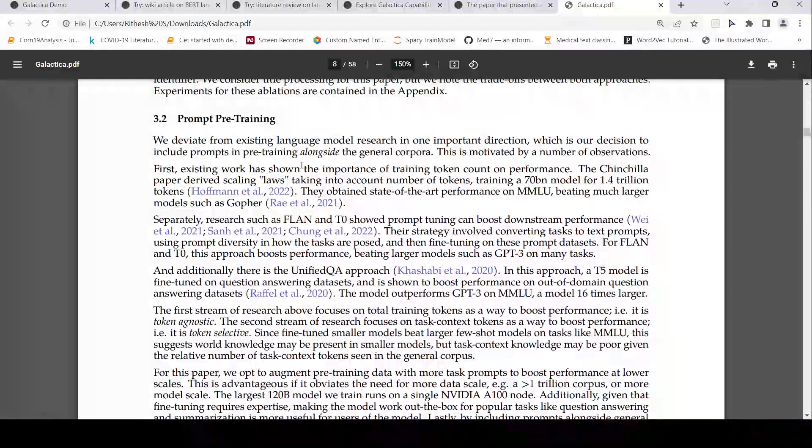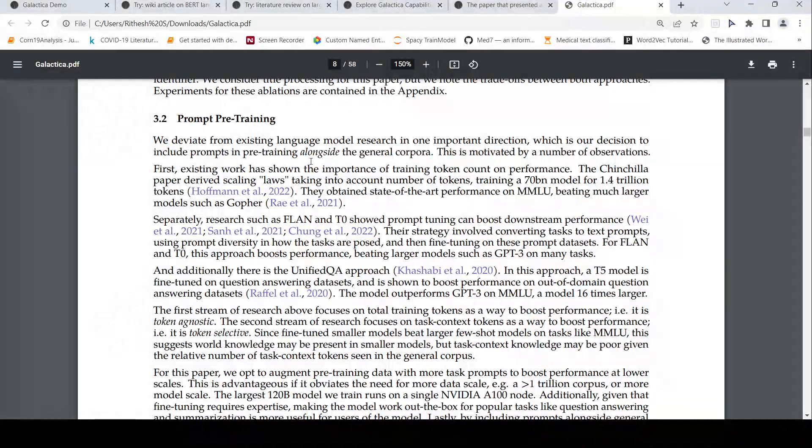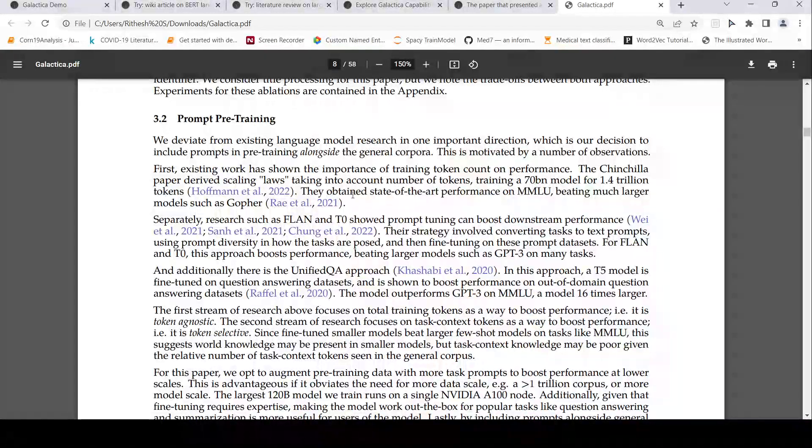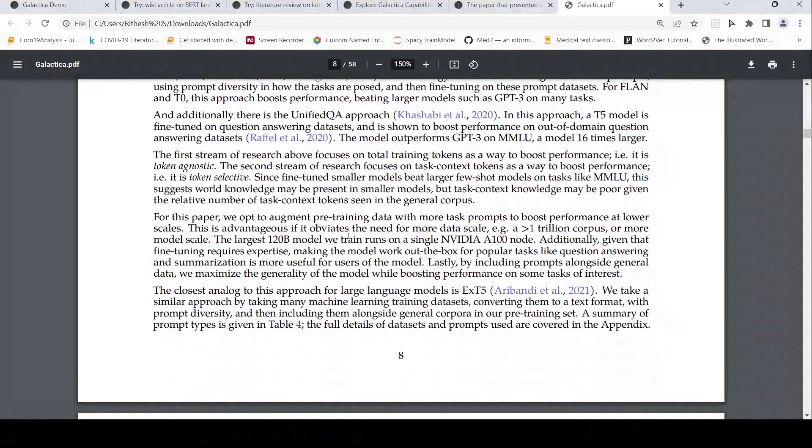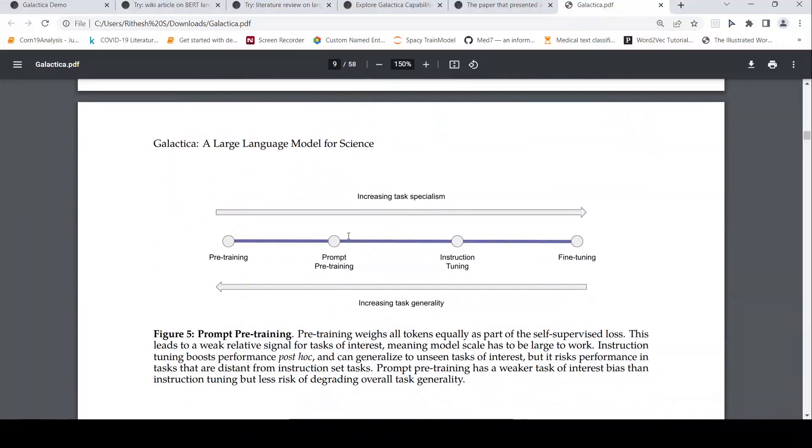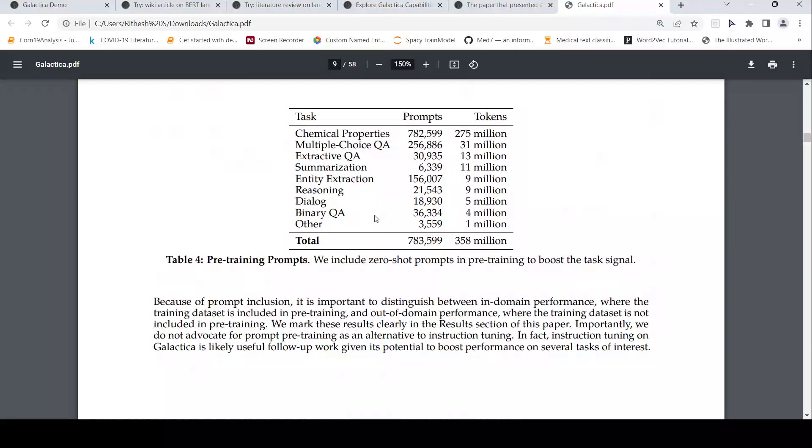One thing which is new over here is that they deviate from existing language model in one important direction. They are including prompts in pre-training. Generally in prompt based models, it is after pre-training, in fine tuning, you introduce prompts. But here they are including prompts in pre-training also. And they have given some details over here on why it helps to improve performance. I'm not going too much into that because it would require another reading for me to fully understand this. But that is what they have done.